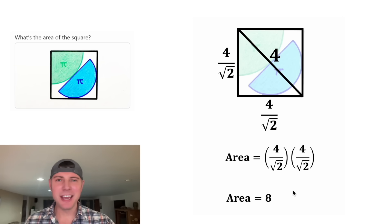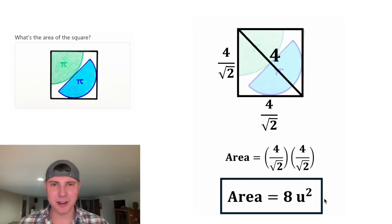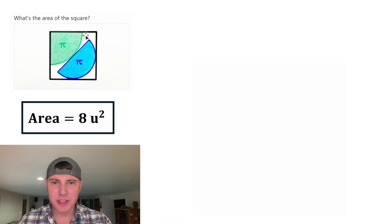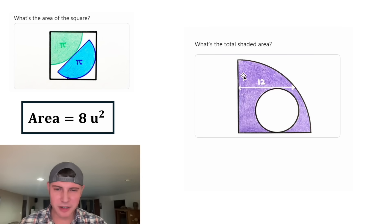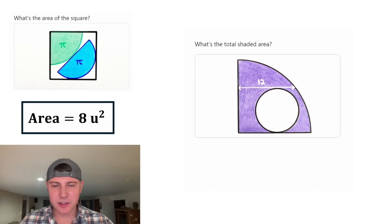16 divided by two is equal to eight, and that is the answer to our question. Let's give it a label of units squared and put a box around it. The area of this square with the quarter circle and the semicircle is eight units squared. And this is tomorrow's puzzle — we're given another quarter circle with a circle cut out of it, and we're given a distance of 12. It wants to know the total shaded area. This looks like it'll be a fun one!